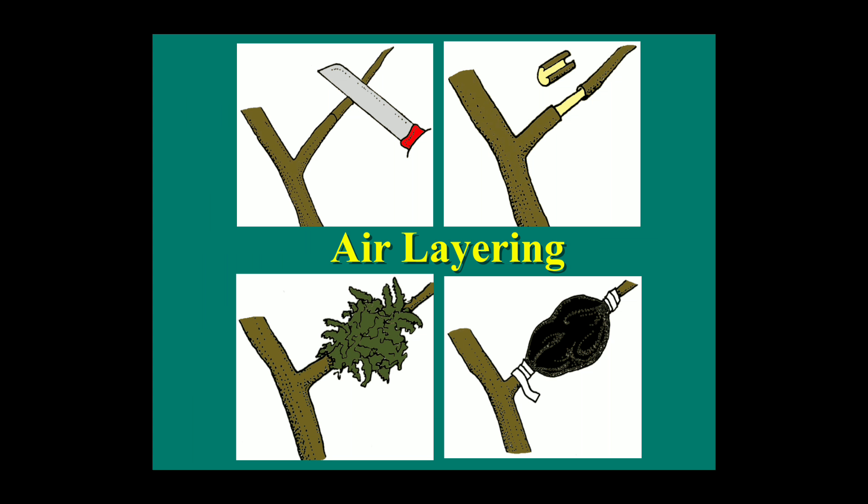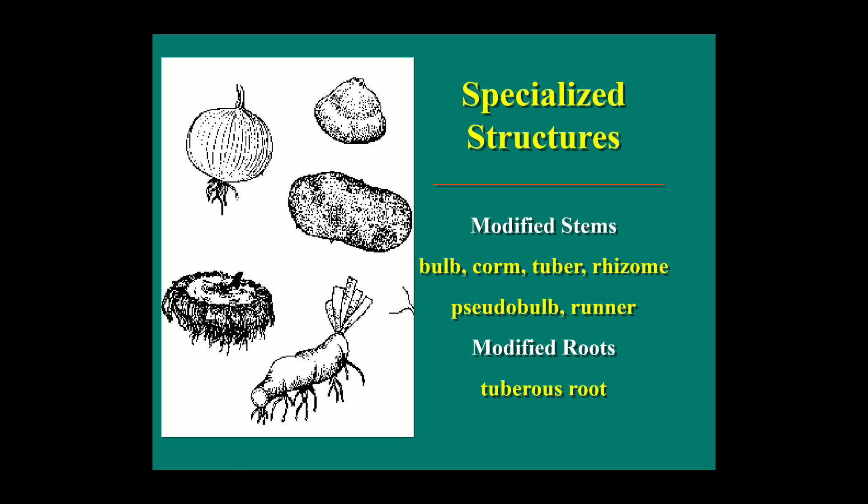In air layering, the peripheral tissue is removed, and the area is bound with soil or dung containing particular nutrients. Root growth will then start and the cutting will eventually grow into a new plant.